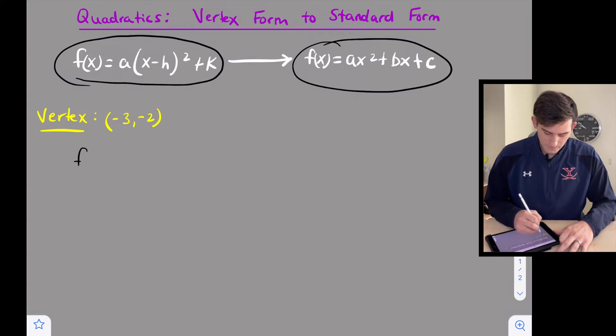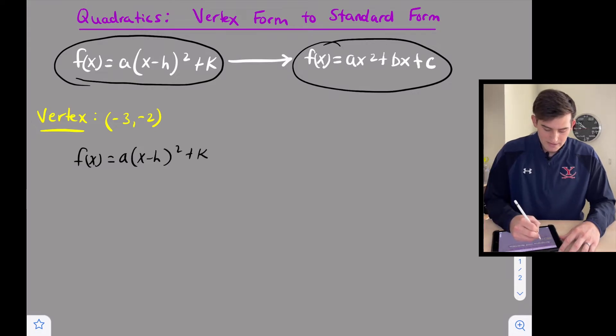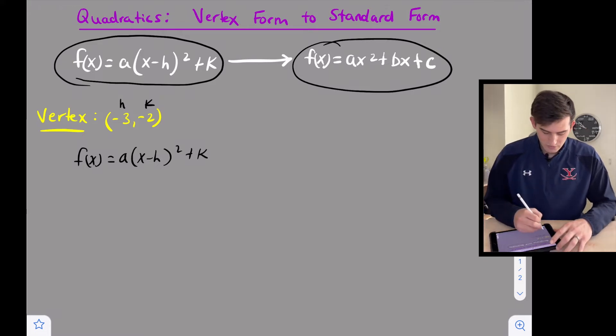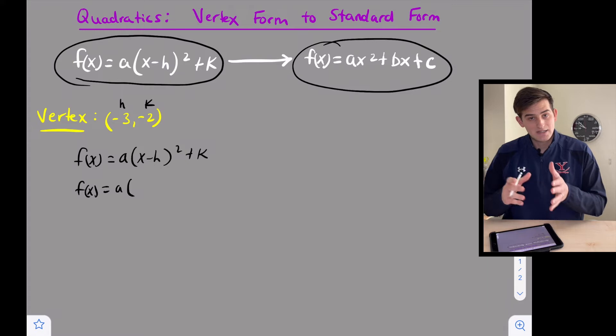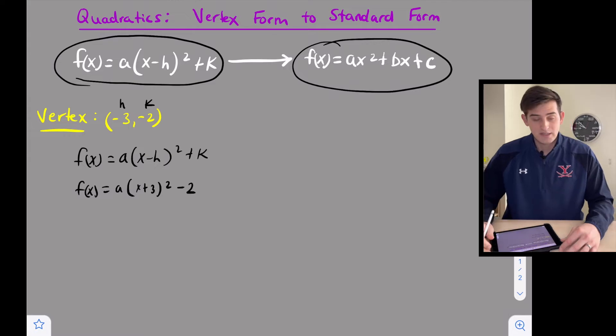So we're going to start off and say f(x) = a(x - h)² + k. And so remember our vertex is h and k so we can plug those in. And remember h is kind of opposite of what it looks like. So once we plug -3 in for h it's going to be x minus negative 3. So we can actually make this (x + 3)² and then we plug in -2 for k.